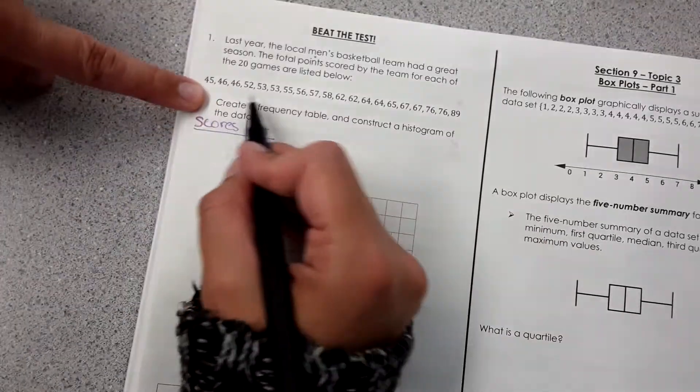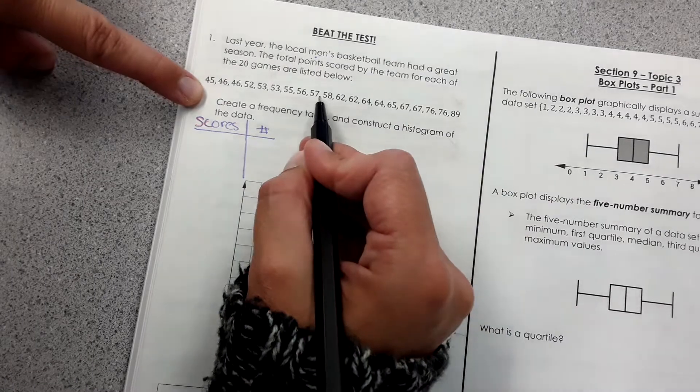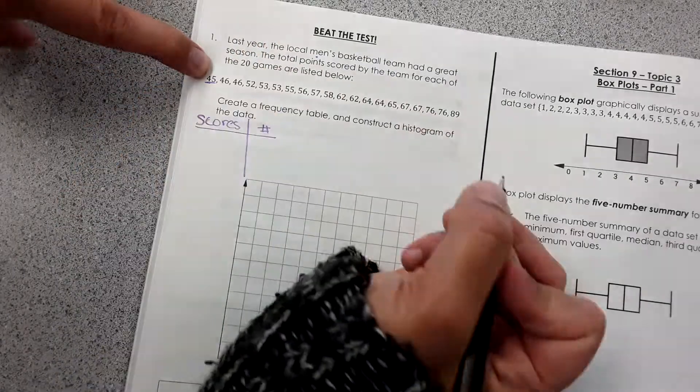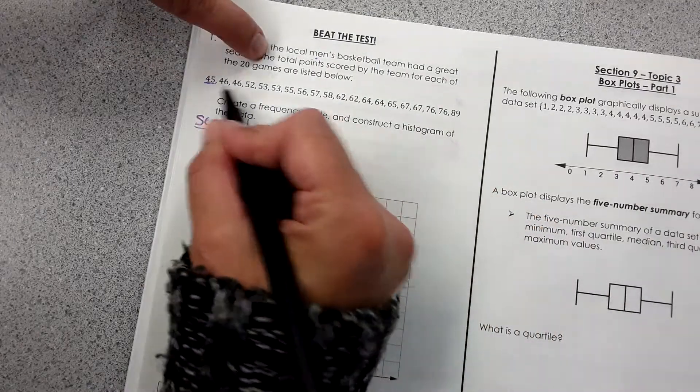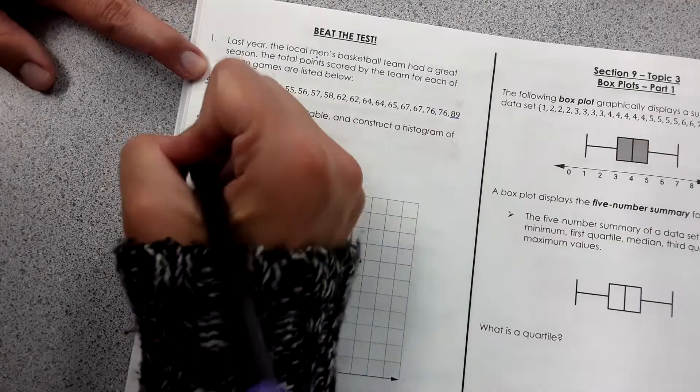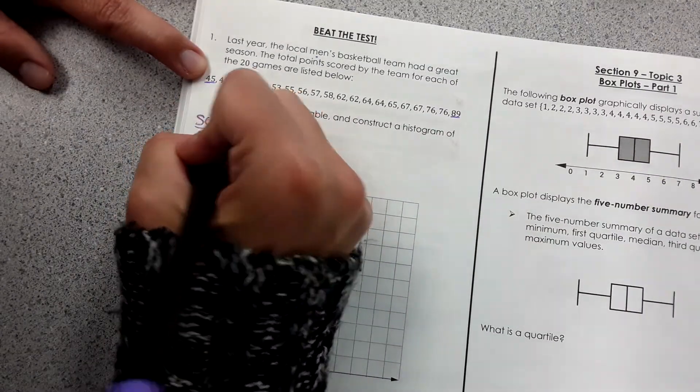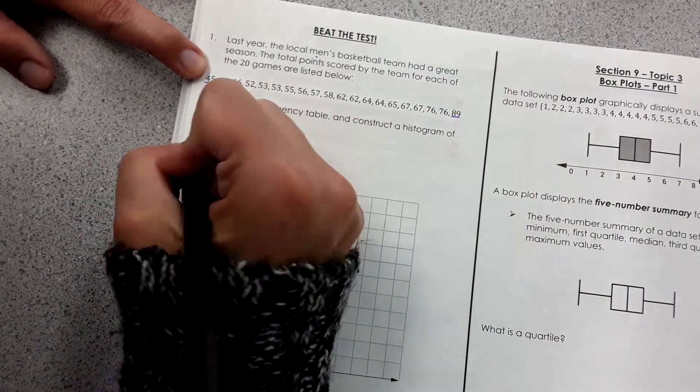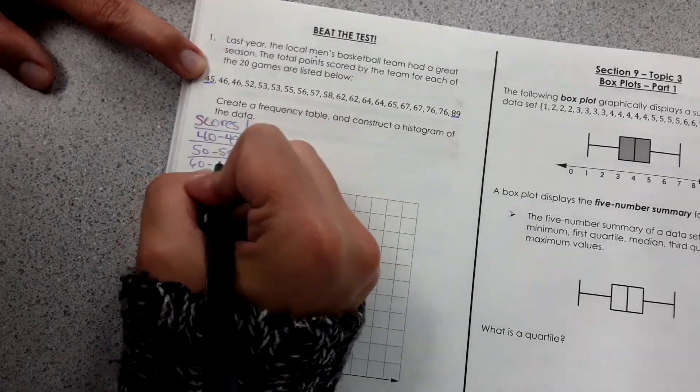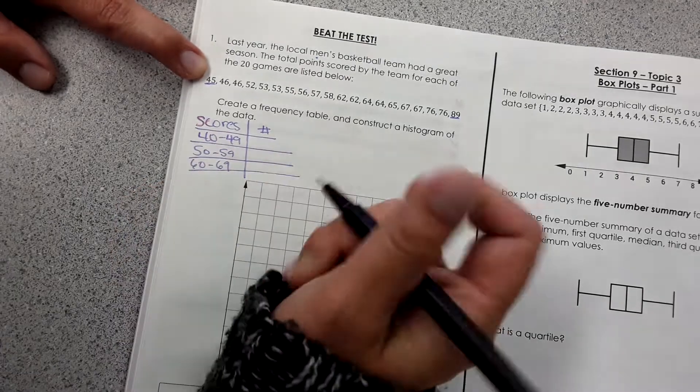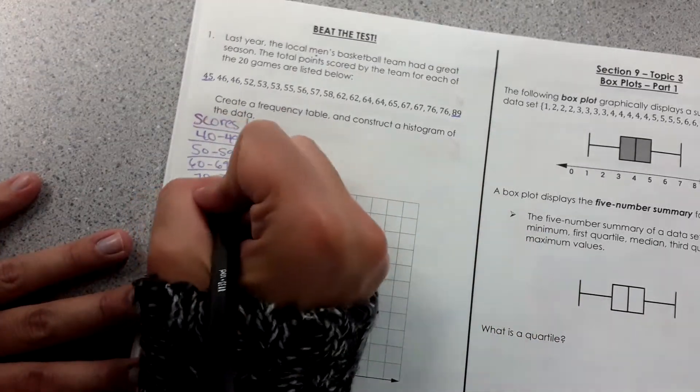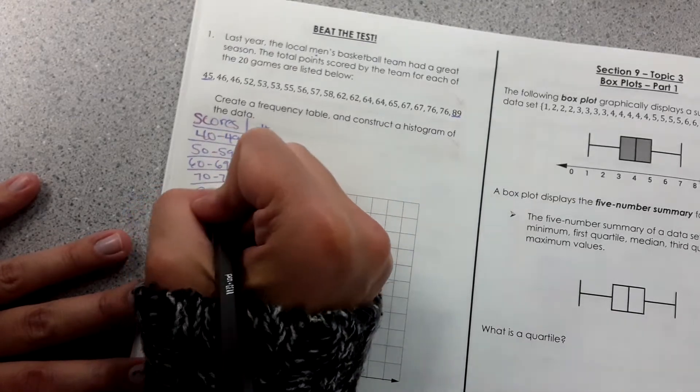Okay, I need to look at the data here. Find the lowest score. It looks like the lowest score. Oh, it's in order. That's nice of them. Lowest score is 45 and the highest is 89. I'm going to do it in groups of 10 again. So 40 to 49, 50 to 59, 60 to 69. Oh, I'm running into my graph. 70 to 79 and 80 to 89.